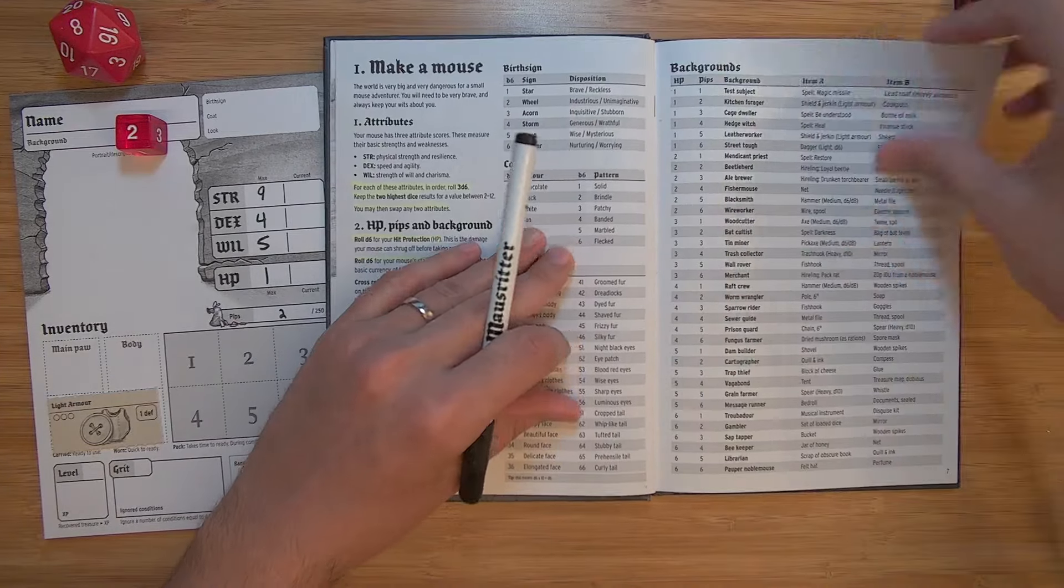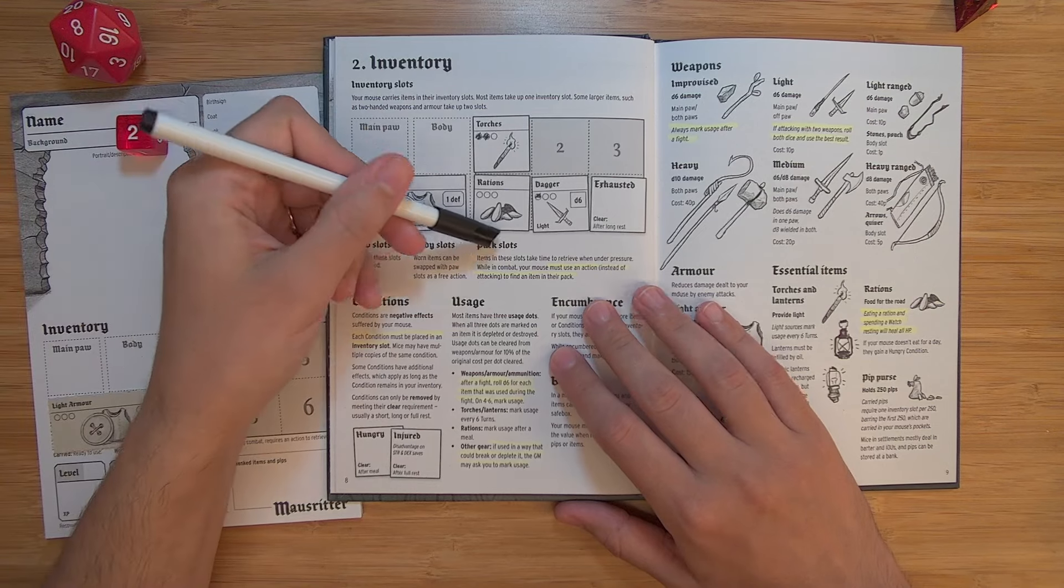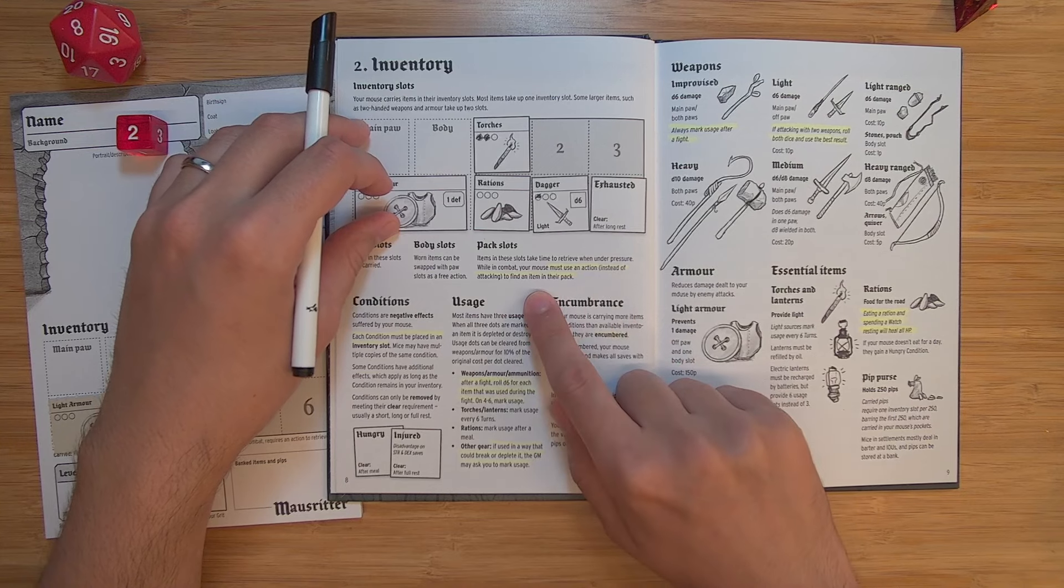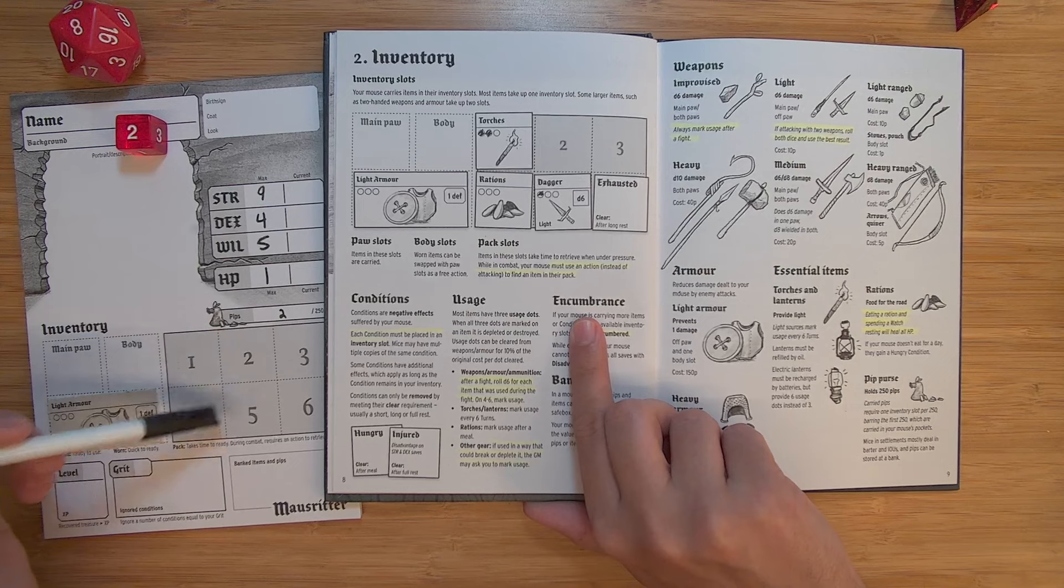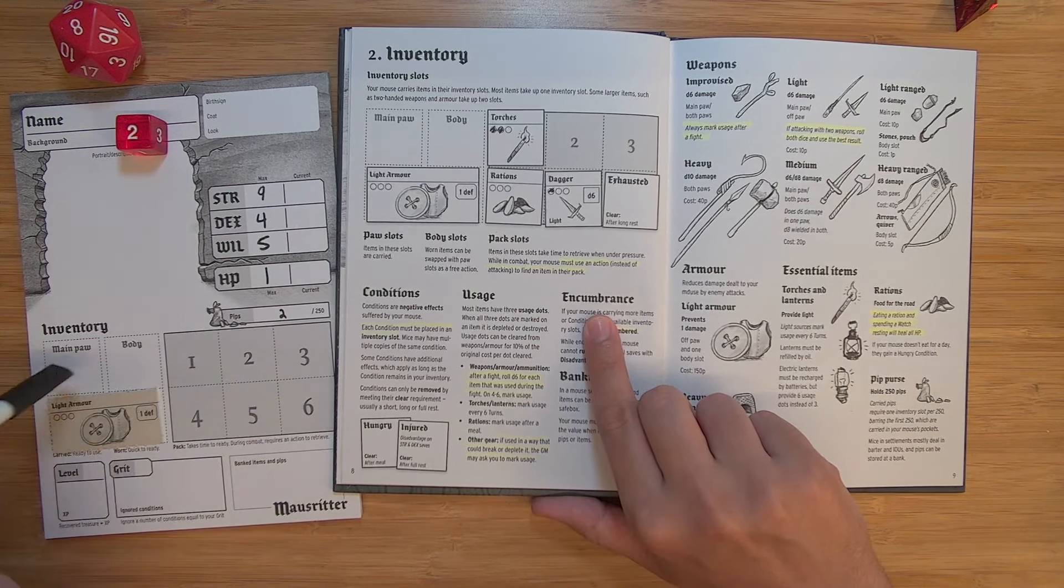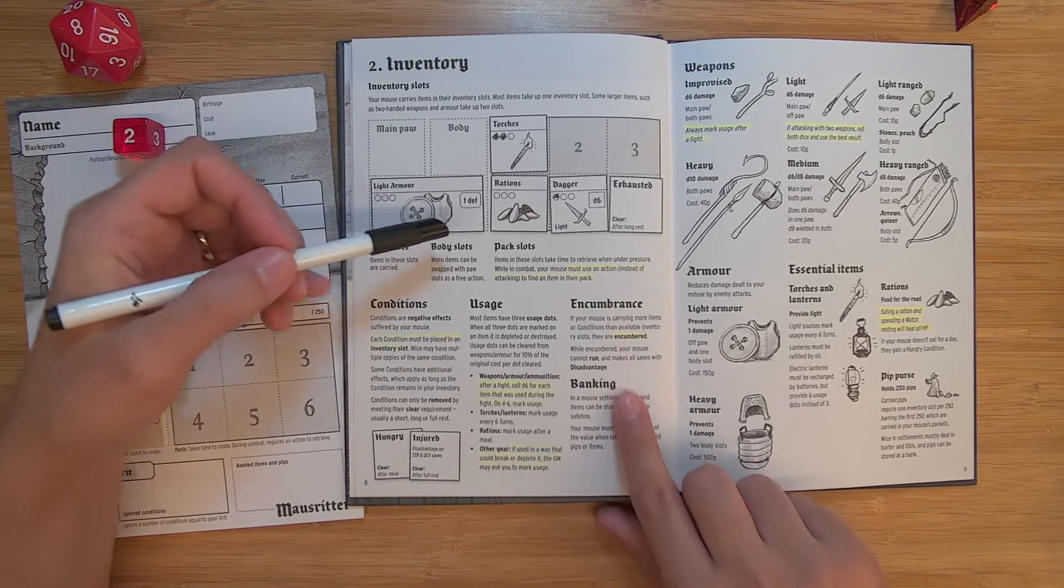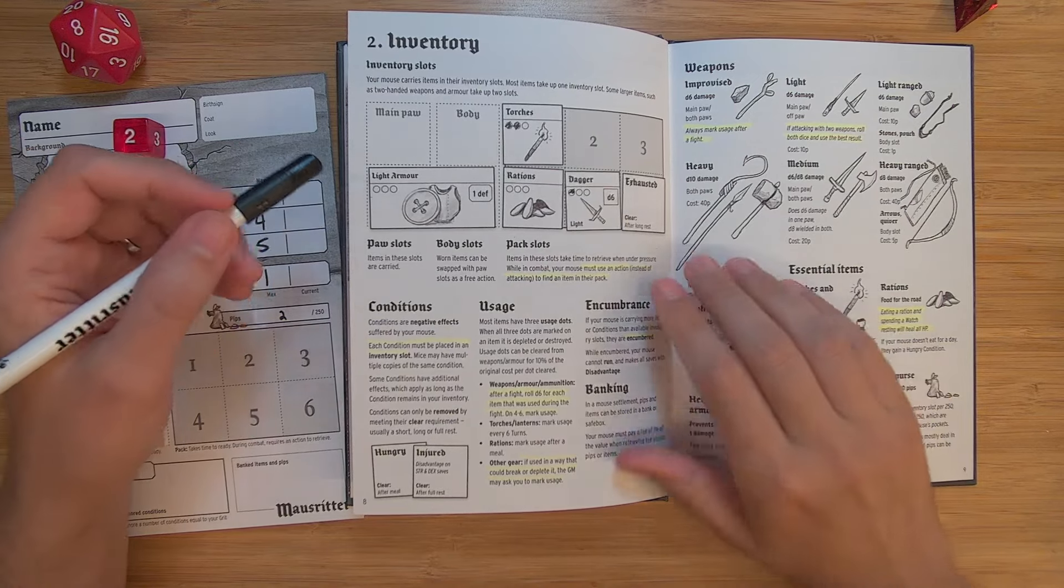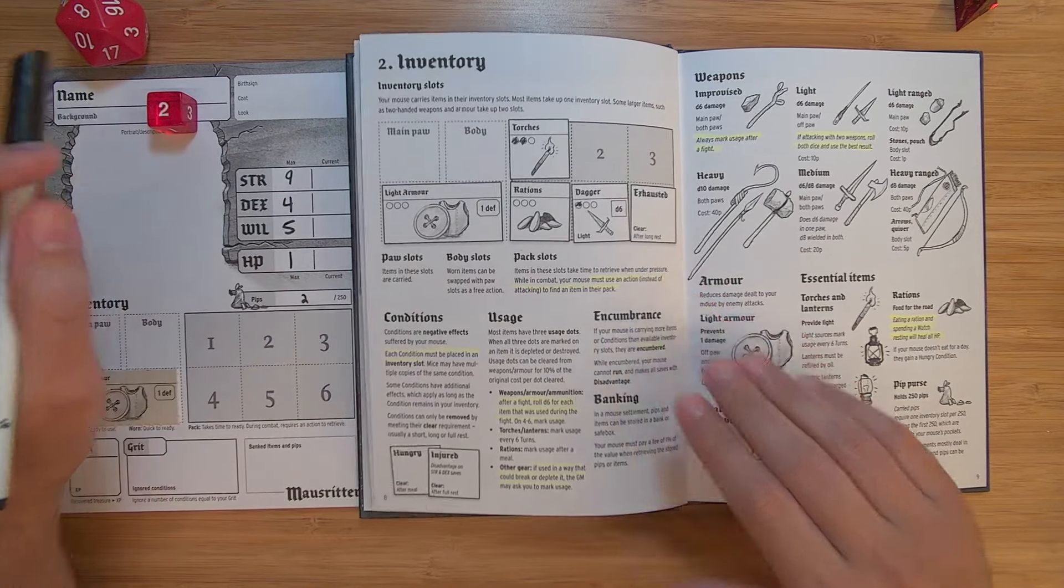So let's look just a little bit more at some of the most interesting core rules. Pack slots. Items in these slots take time to retrieve when under pressure. While in combat, your mouse must use an action instead of attacking to find an item in their pack. So if you have a torch or other things, a dagger, other things that you want to reach, it's going to take an action to grab it. And then you can only easily use the things that are in your paws, your main paw or your off-paw. So I really like that as a way to balance the action economy. And it sort of prevents the common D&D trope of I stick everything in my pack and we don't really worry about what we're carrying. You're able to make more interesting choices that way.